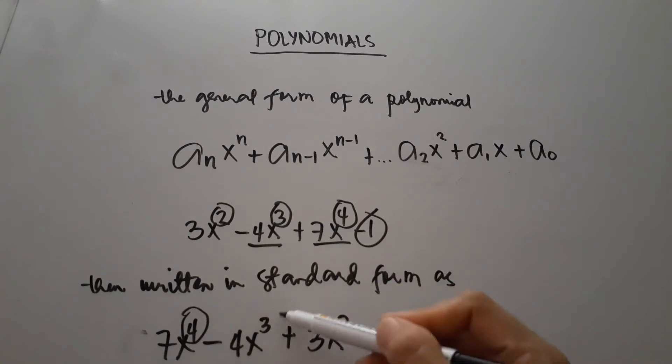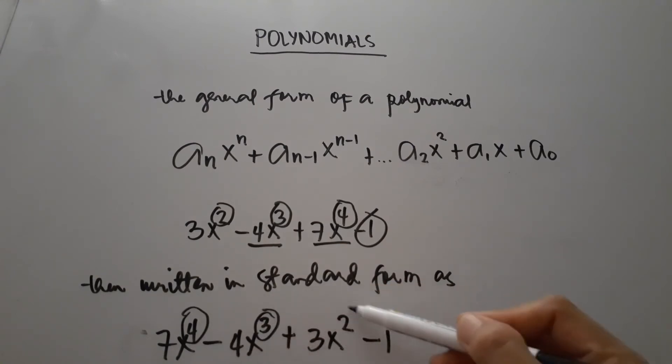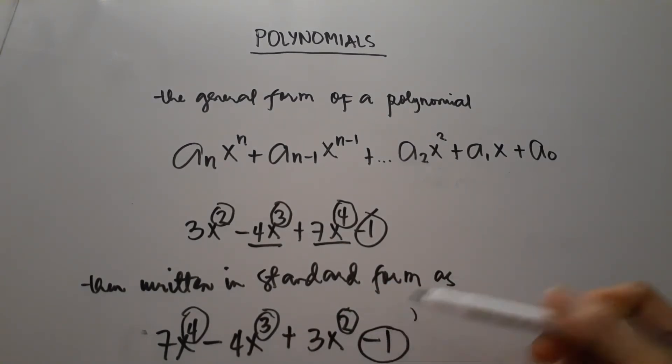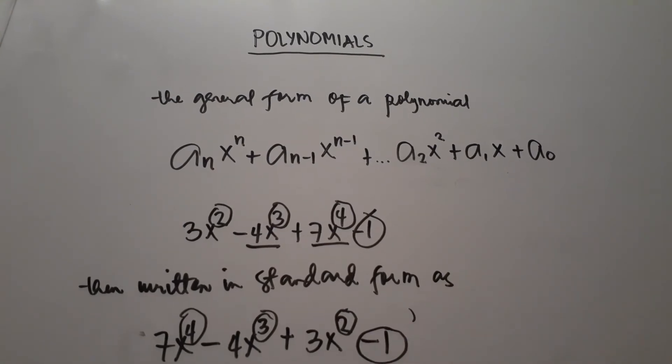So it is written in decreasing power: from the degree of 4, then 3, then 2, and the constant is negative 1.